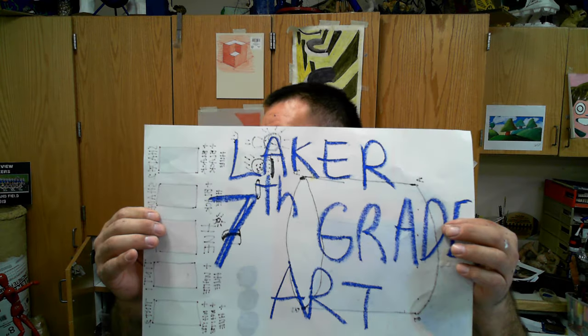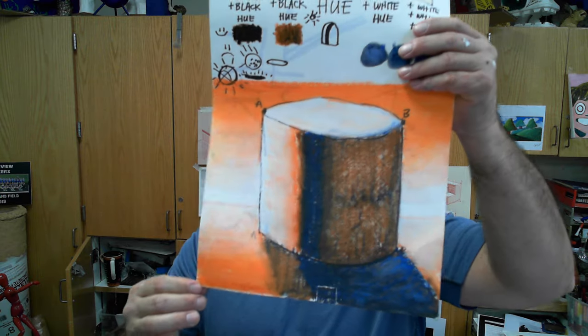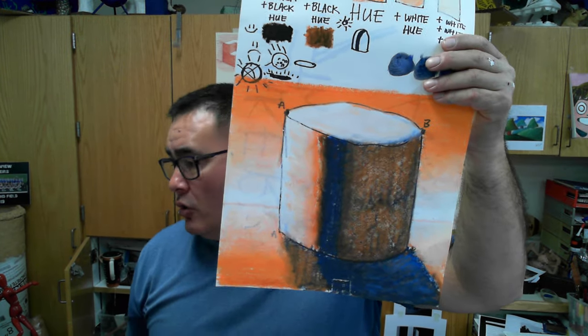Hey, welcome aboard. This is 7th Grade Laker Art with Mr. Sterner. And we are going to be working on how to do a value scale and how to create a cylinder with shading.